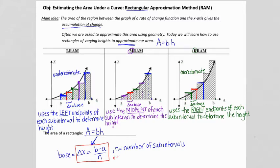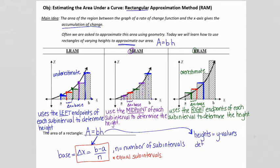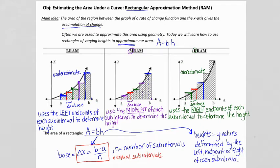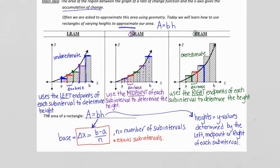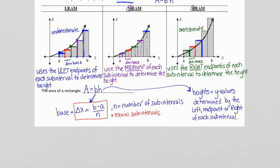These are always equal subintervals. The height of our rectangles are the y values, and these are determined by either the left, midpoint, or right side of the interval, according to what you're asked for. So the height is a y value from either the left, midpoint, or right of each subinterval. To approximate the full area underneath the curve, we add up all of these rectangles.